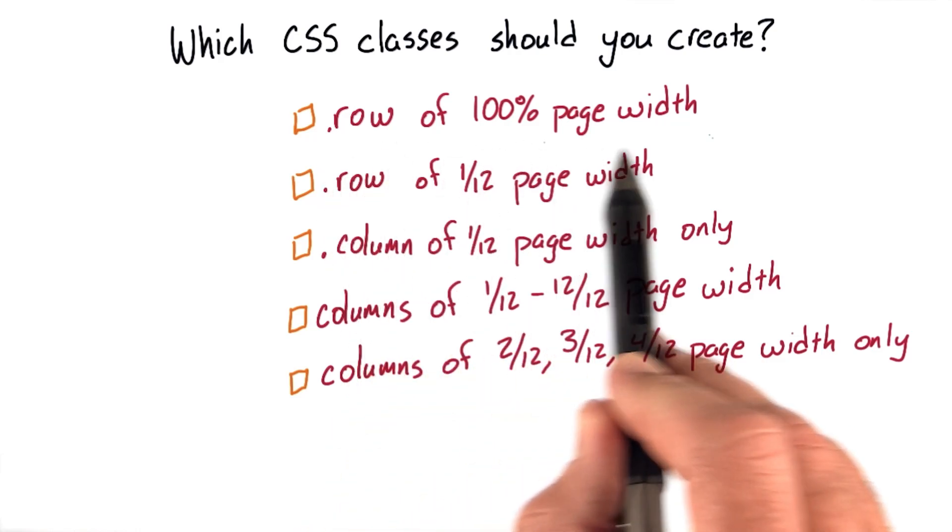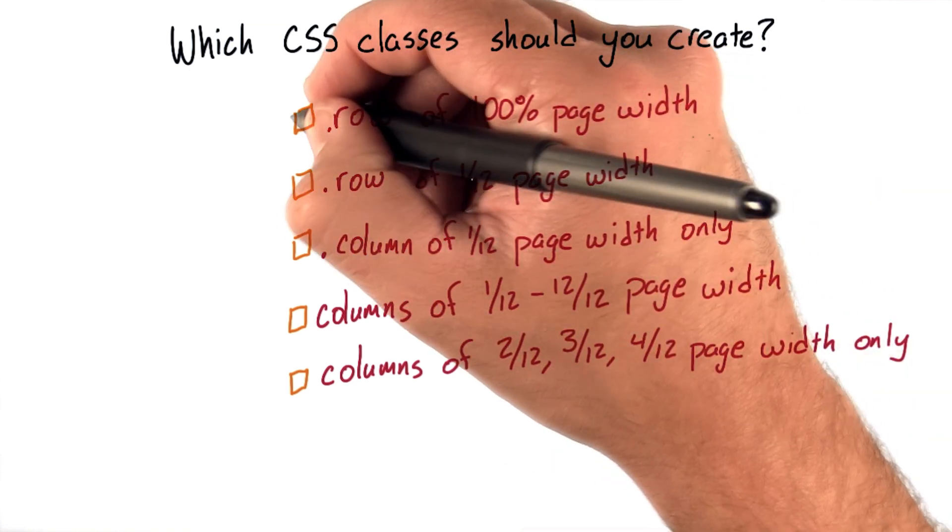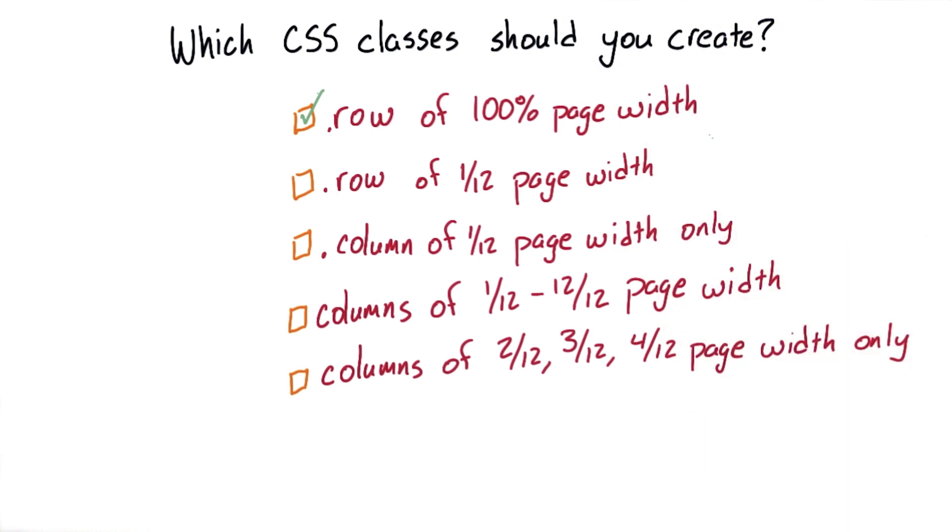A row class of 100% of the page width. Well, this seems pretty necessary because we want each row of columns to take up as much space as they can. So we will check that off because we need it.